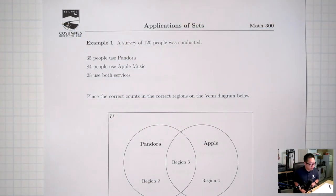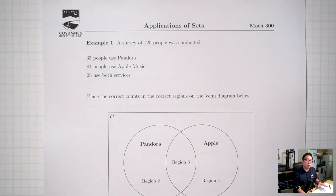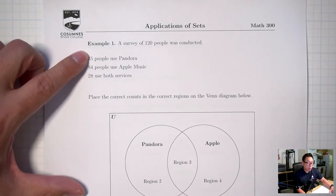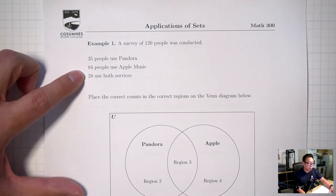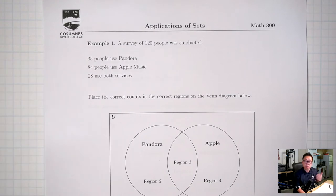Hello, welcome back. Today we're going to talk about the applications of set theory. I'm going to jump into this first example. A survey of 120 people was conducted: 35 people use Pandora, 84 people use Apple Music, and 28 people use both services.